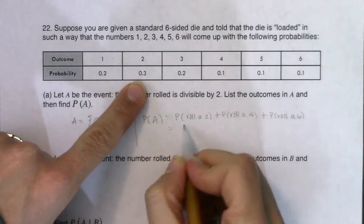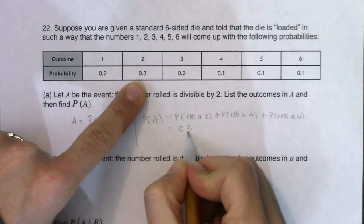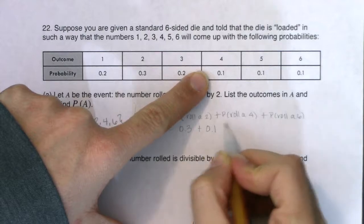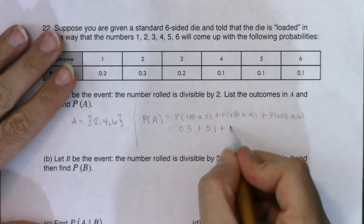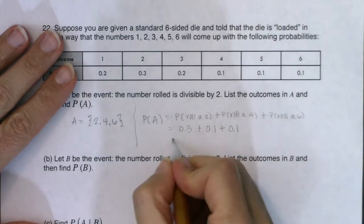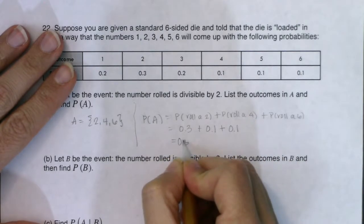The probability that I roll a two is 0.3. The probability that I roll a four is 0.1. And the probability that I roll a six is also 0.1. So when I add those three numbers together, I have 0.5.